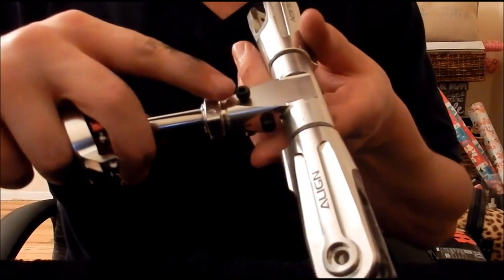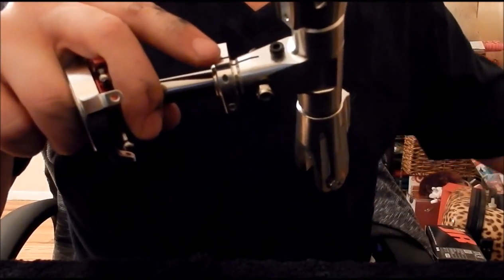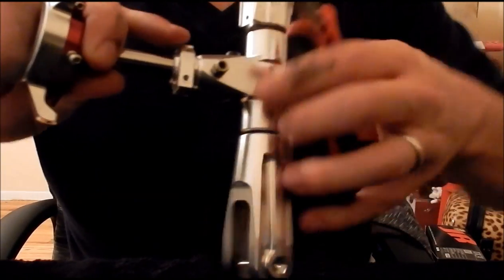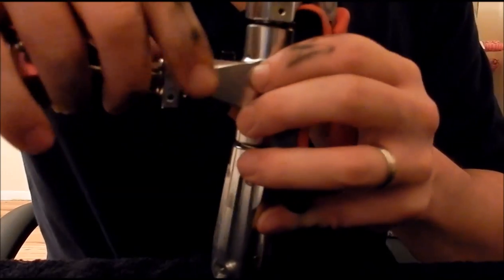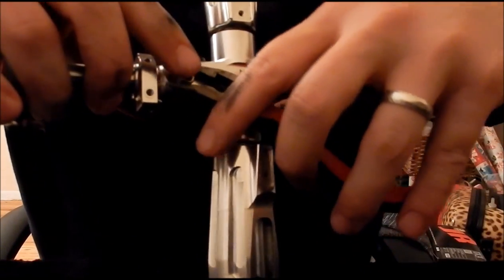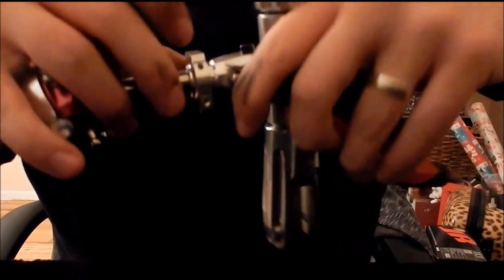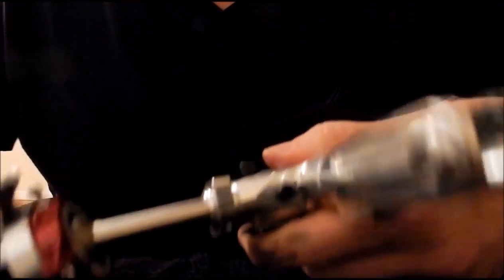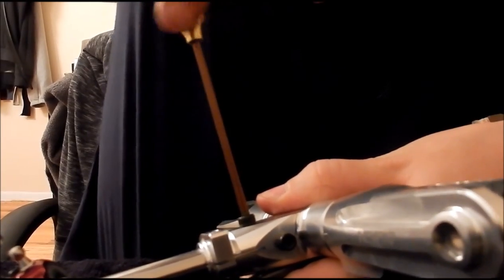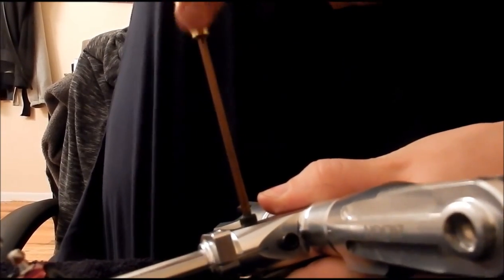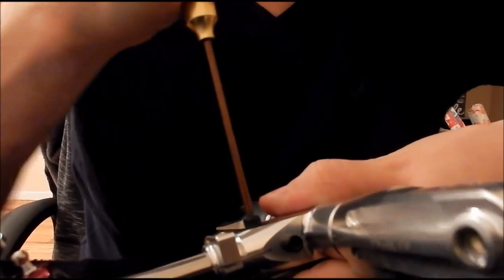So now we'll also go ahead and tighten up our regular Jesus bolt here up top. Just grab a set of small needle nose pliers. Usually I just push the actual nut up against the housing. Grab that from this side here. Kind of just hold it like this so it doesn't start to slip on you. Just come from the top and just start cranking down on your Jesus bolt. And this you want to get relatively tight. Pretty much as tight as you possibly can.